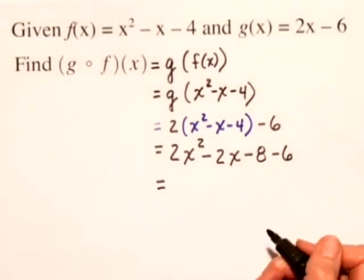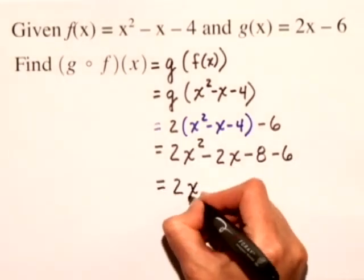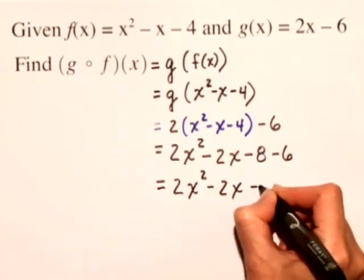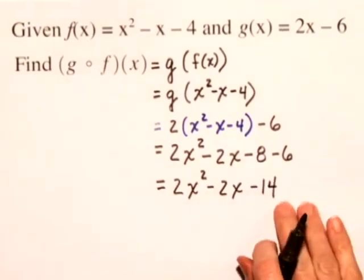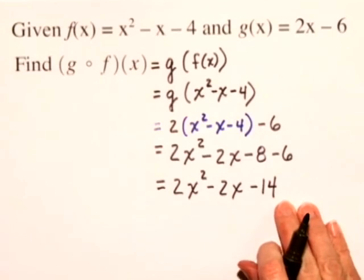We can simplify this just a little bit. We get 2x squared minus 2x minus 14, and this is the result when we take g of f of x.